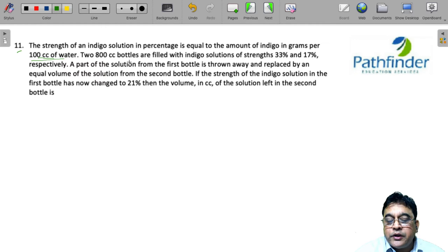Two 800 cc bottles are filled with indigo solutions of strength 33% and 17% respectively. A part of the solution from the first bottle is thrown away and replaced by an equal volume from the second bottle. If the strength in the first bottle has now changed to 21%, then the volume in cc in the second bottle...